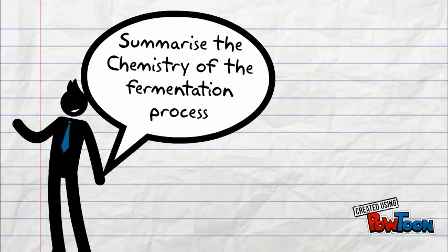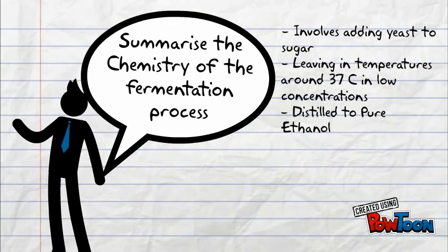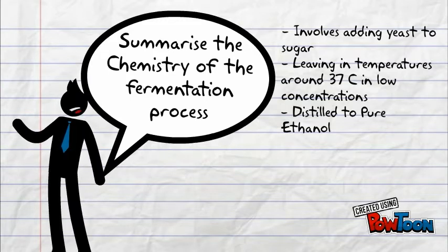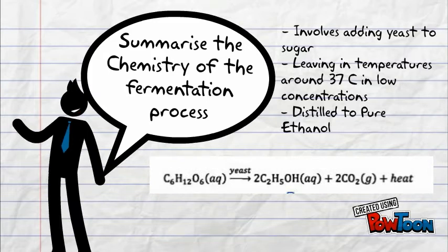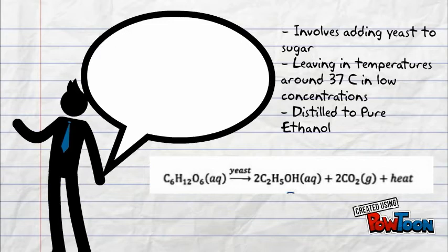To summarize the chemistry of the fermentation process: adding yeast to sugar in a solution and leaving it for several days in anaerobic conditions will give off carbon dioxide, leaving you with a mixture of ethanol and water. The chemical equation shows glucose as the reactant, and by adding yeast to speed up the reaction, you obtain ethanol and carbon dioxide as the products.